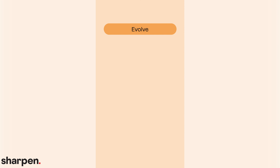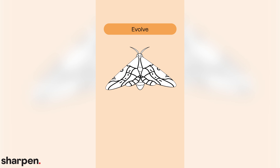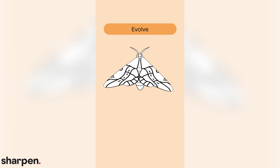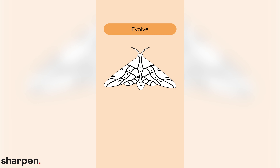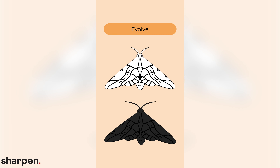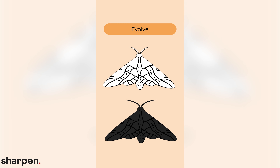One well-known example of evolution in action is the peppered moth. After Britain's industrialization and increased coal use coated the country's birch trees in a layer of dark soot, the once-white-peppered moth turned to black in order to avoid detection from potential predators.